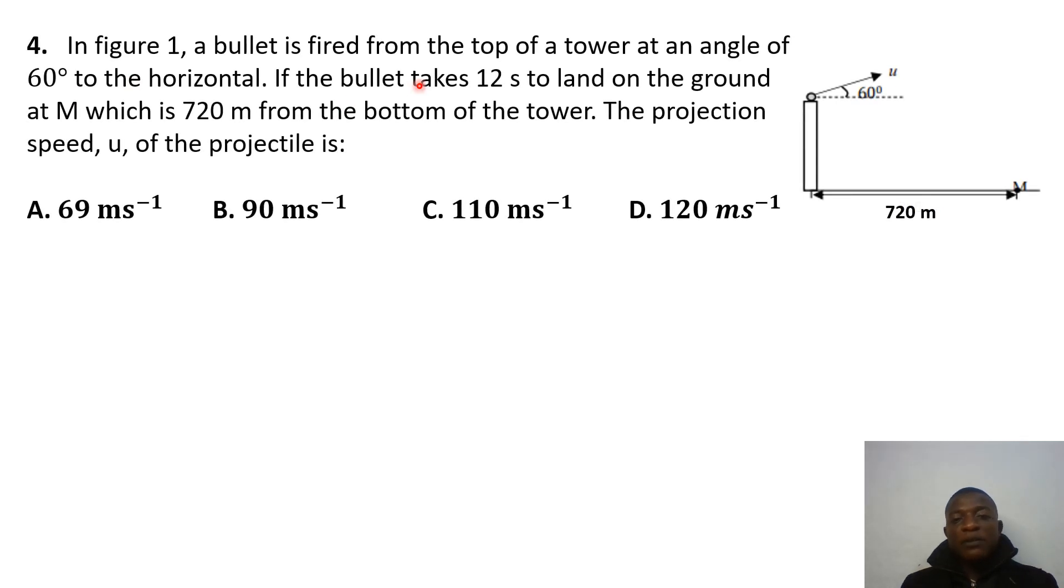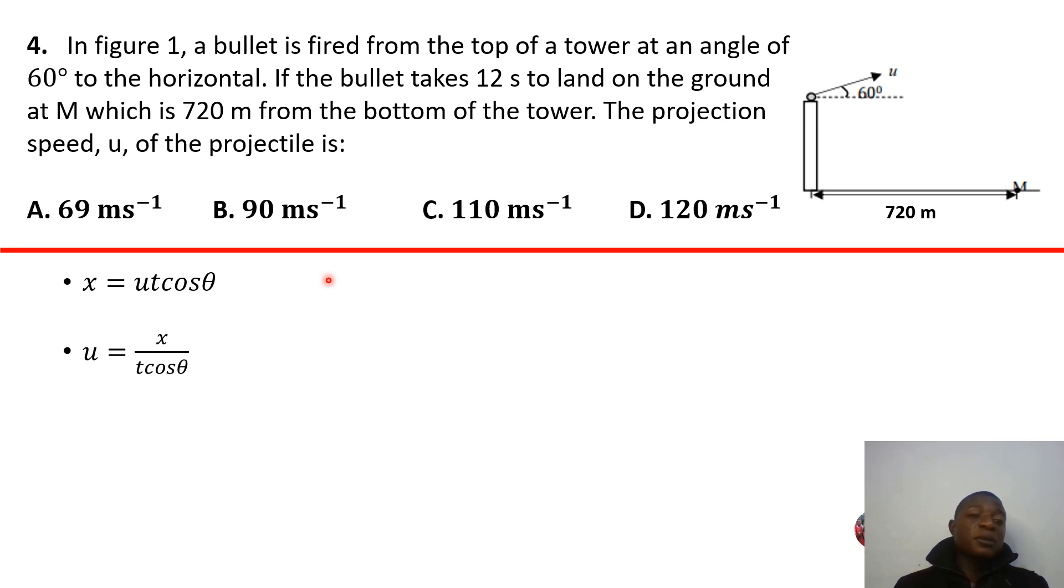Question 4: When a bullet is fired from the top of a tower at an angle of 60 degrees to the horizontal, if the bullet takes 12 seconds to land on the ground at M, which is 720 meters from the bottom of the tower, the projection speed U of the projectile is. Okay, this one is very easy, right? So you basically just X equals UT cos theta, and that's the horizontal is the projector, right? So you just make U the subject, and then, of course, you substitute X is 720, T is 12, and then cos theta, cos 60 is 0.5, so you punch that in, and U is 120 meters per second. And our answer there is just B.